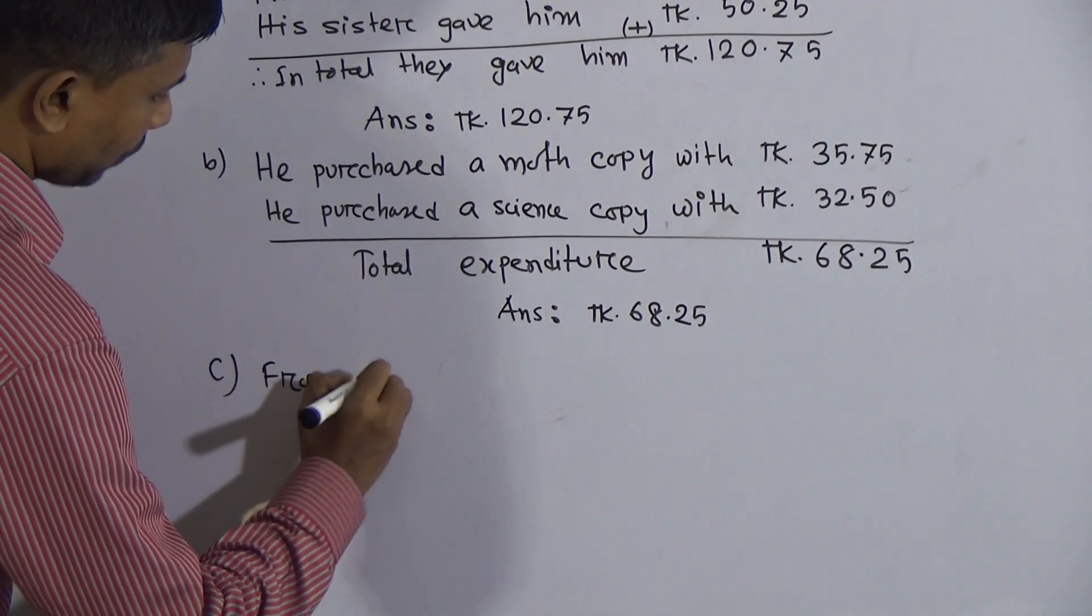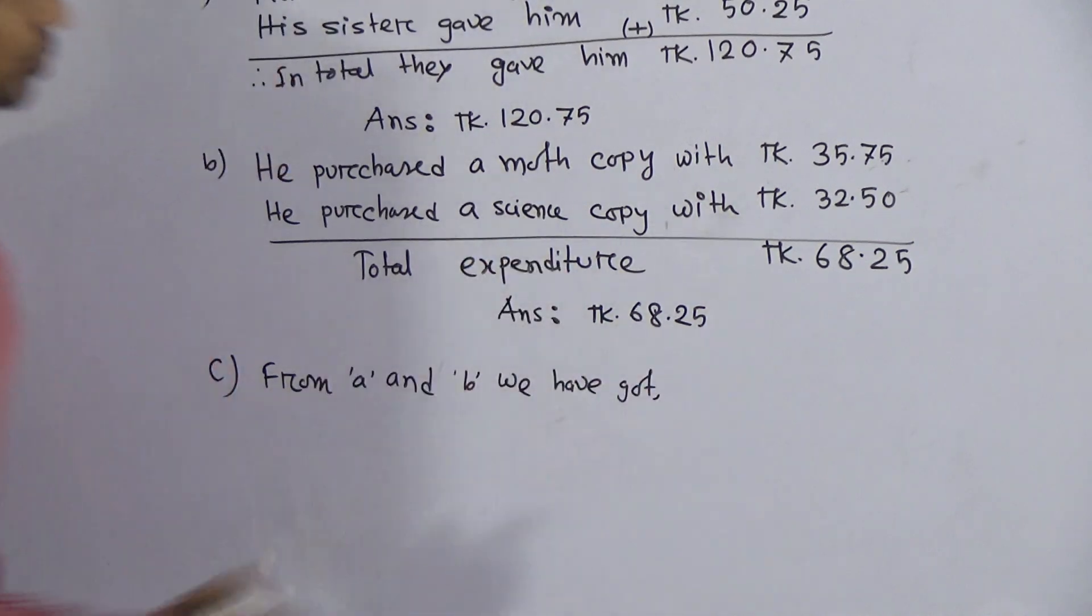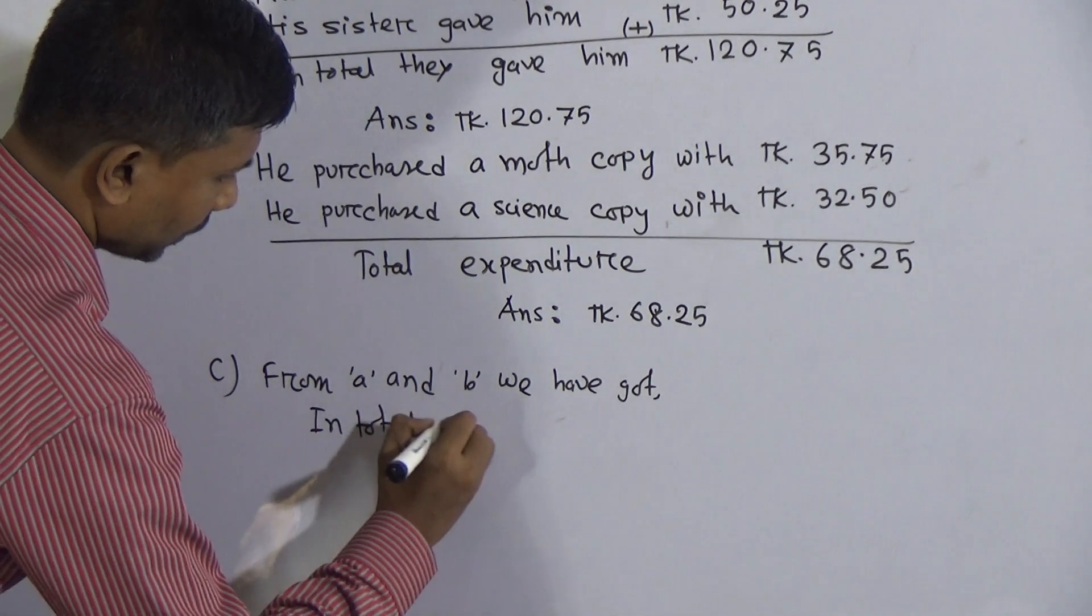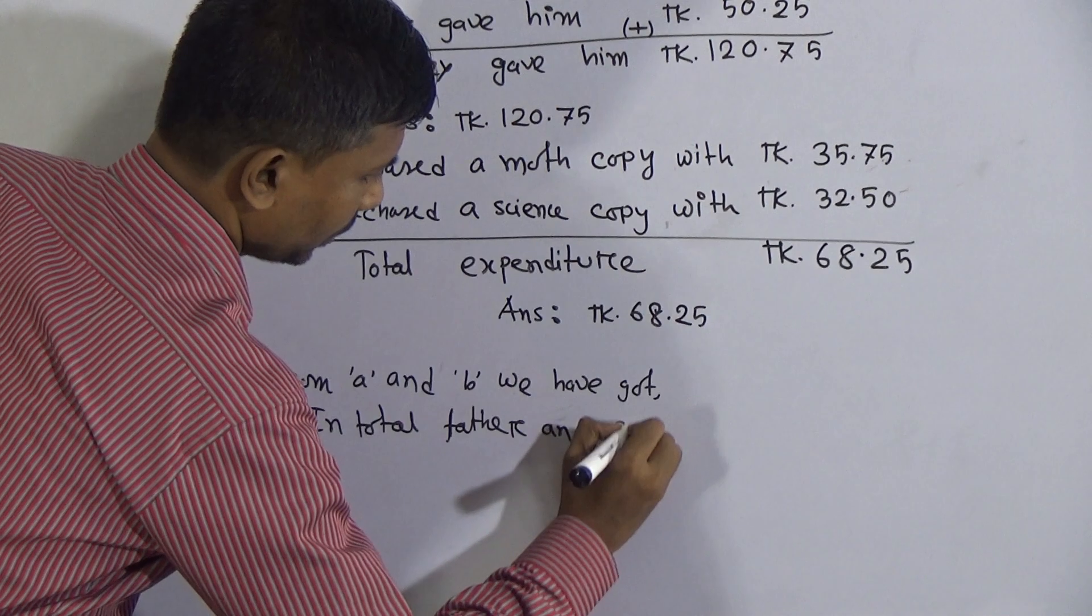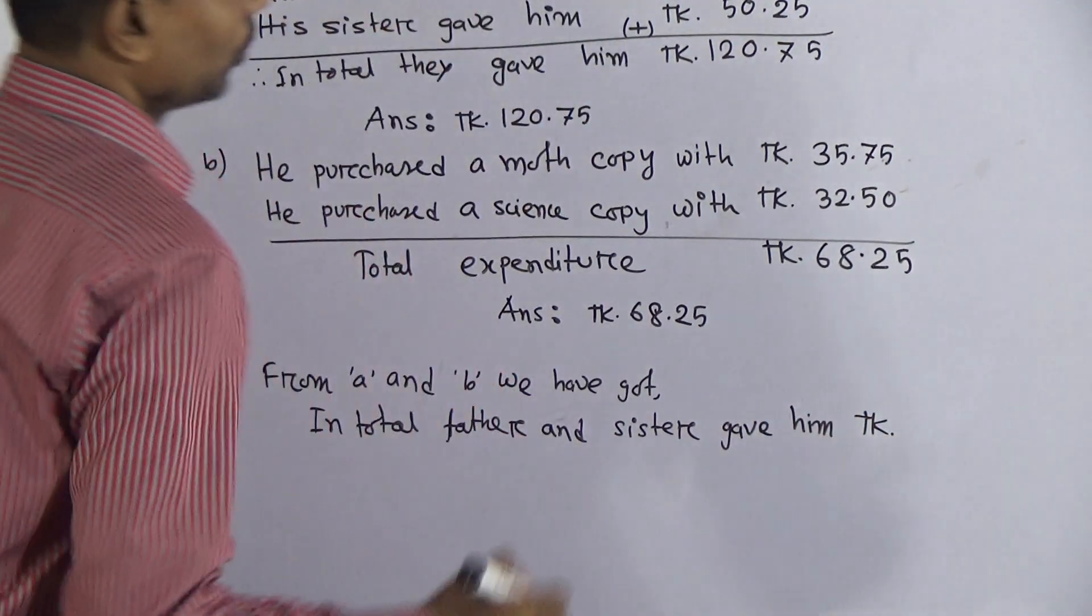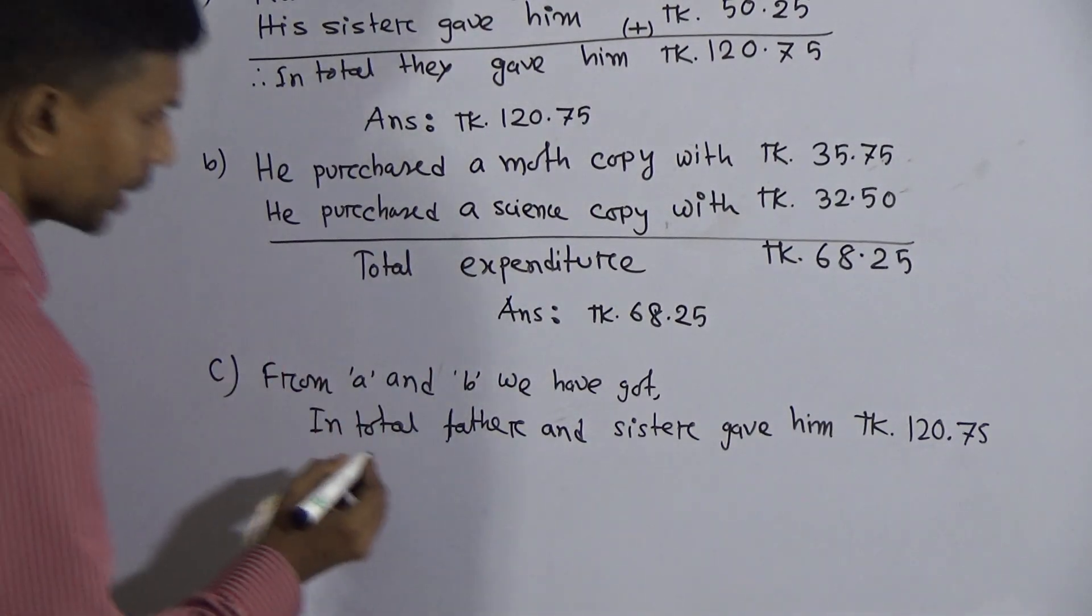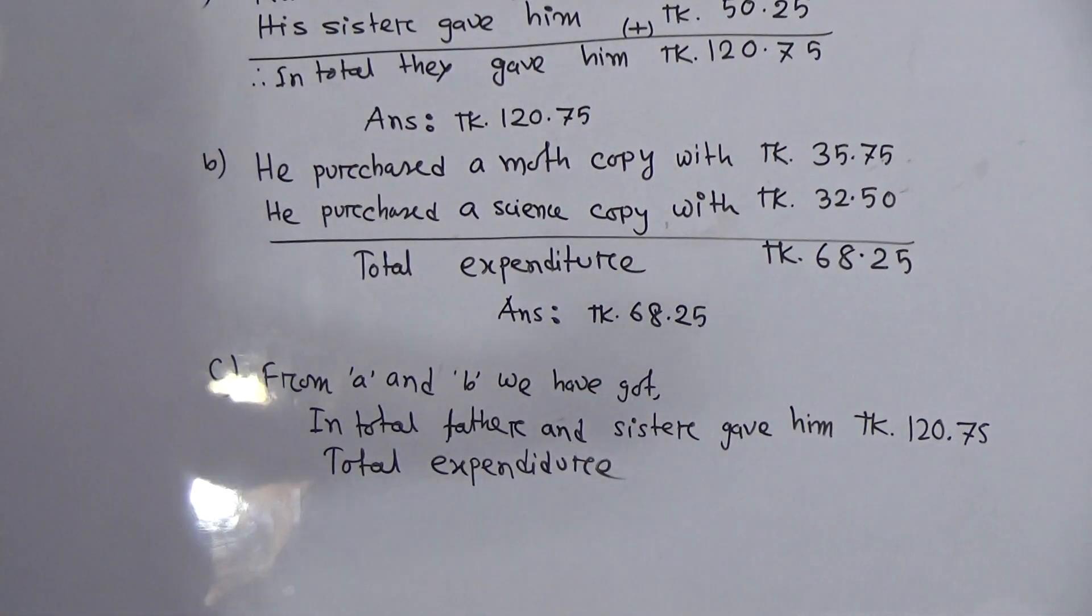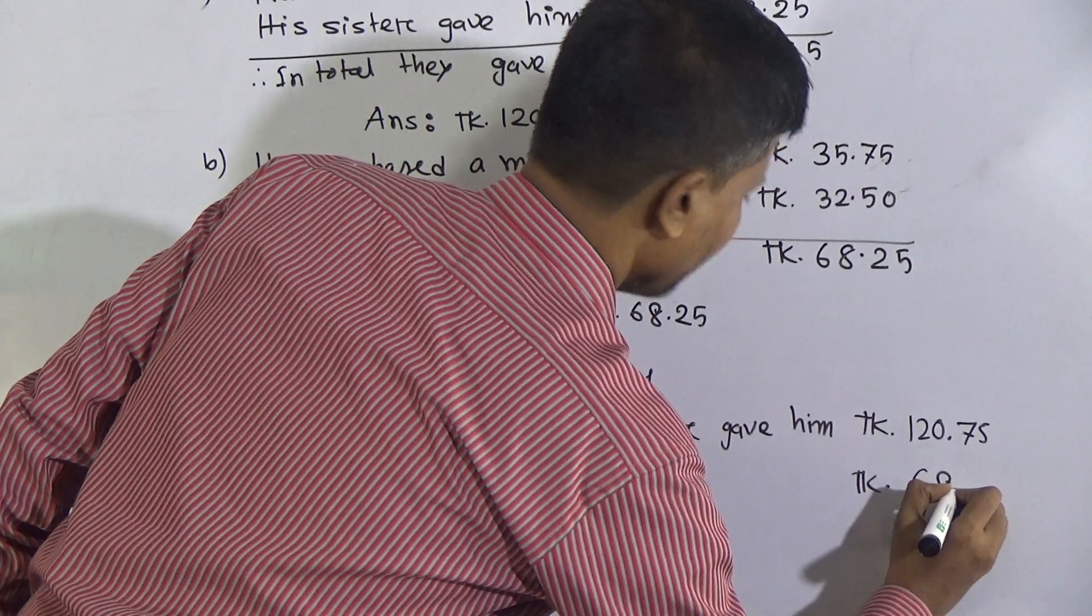Write: from a and b we have got, right, from a and b we have got, in total Rahim has got taka 120.75. Total expenditure is Taka 68.25.